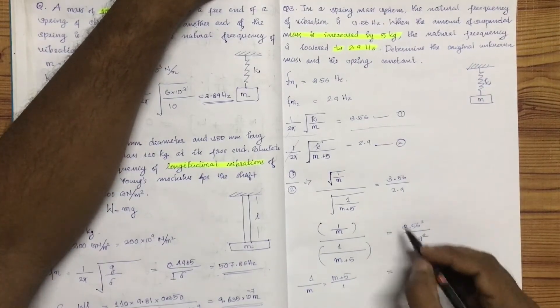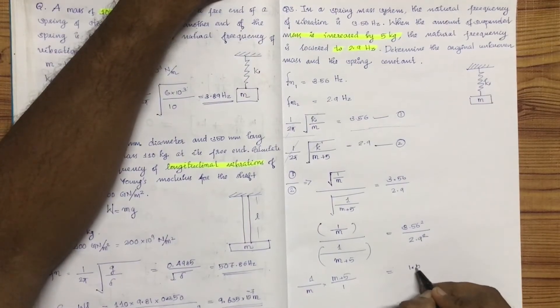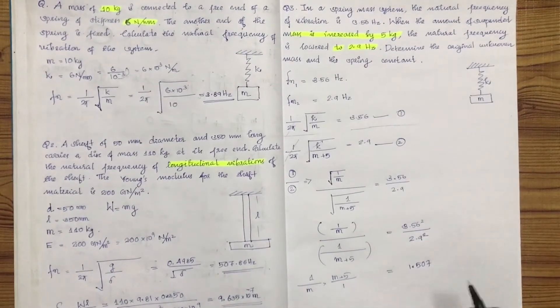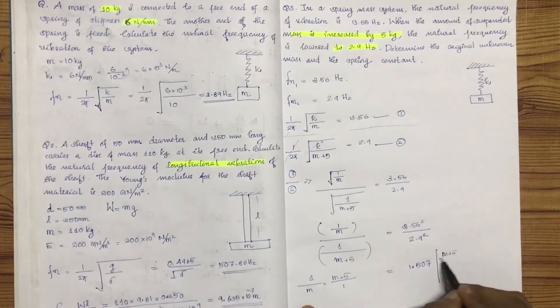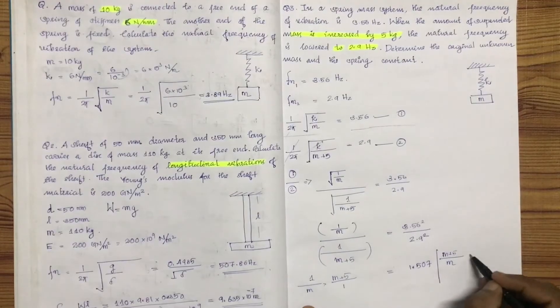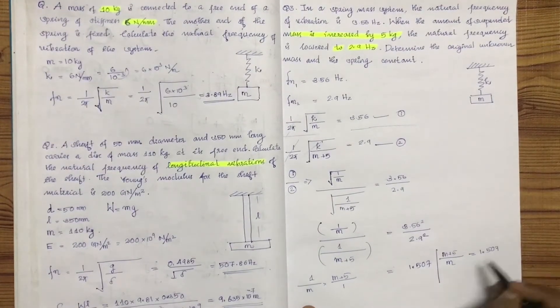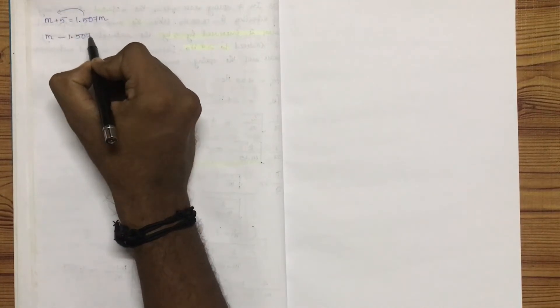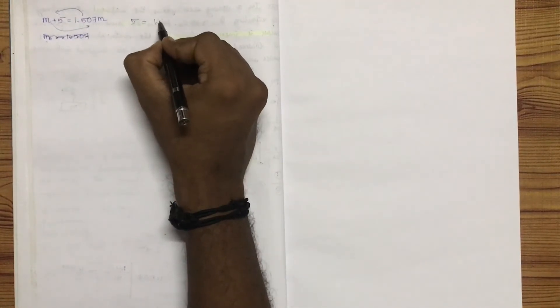Squaring both sides gives (m + 5) / m = 1.507. So m + 5 = 1.507m, which gives m = 5 / (1.507 - 1).